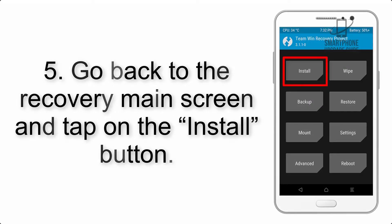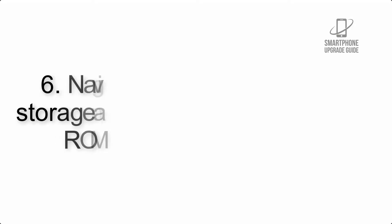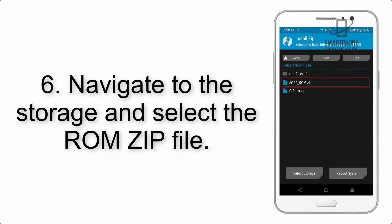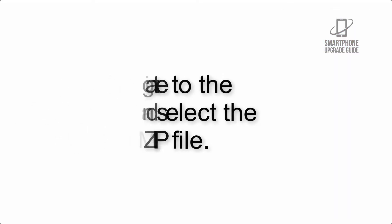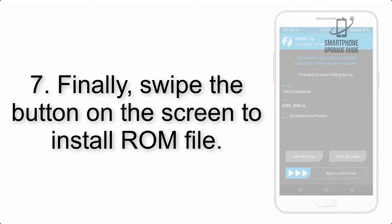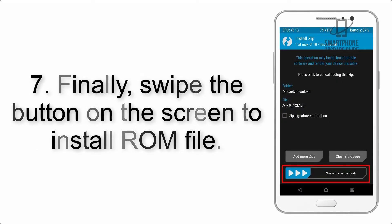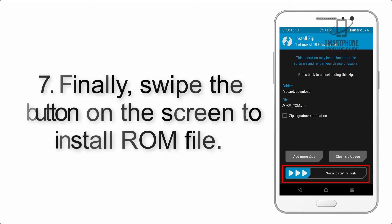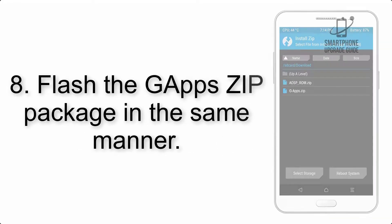Step 5: Go back to the recovery main screen and tap on the Install button. Step 6: Navigate to the storage and select the ROM zip file. Step 7: Finally, swipe the button on the screen to install the ROM file.